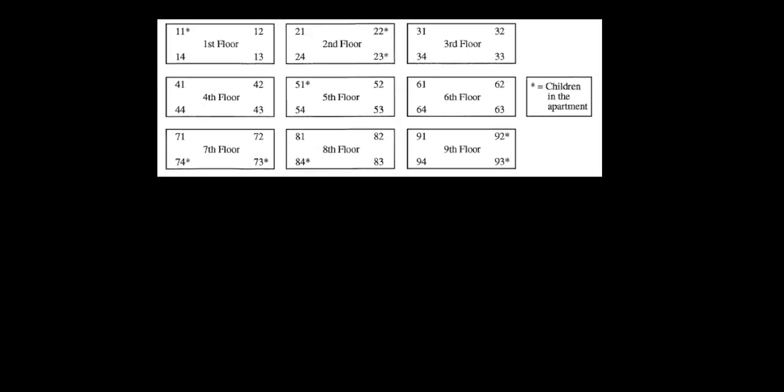All right. Now here's another type of problem where you have to decide how could you do a simple random, cluster, or stratified. All right. So these are nine floors of an apartment building and each floor has four apartments on it. And you'll notice some of the apartments have children and those are marked with asterisks. So if I wanted to get a sample of eight apartments, okay, that's my goal is to get a sample of eight random apartments. Okay.